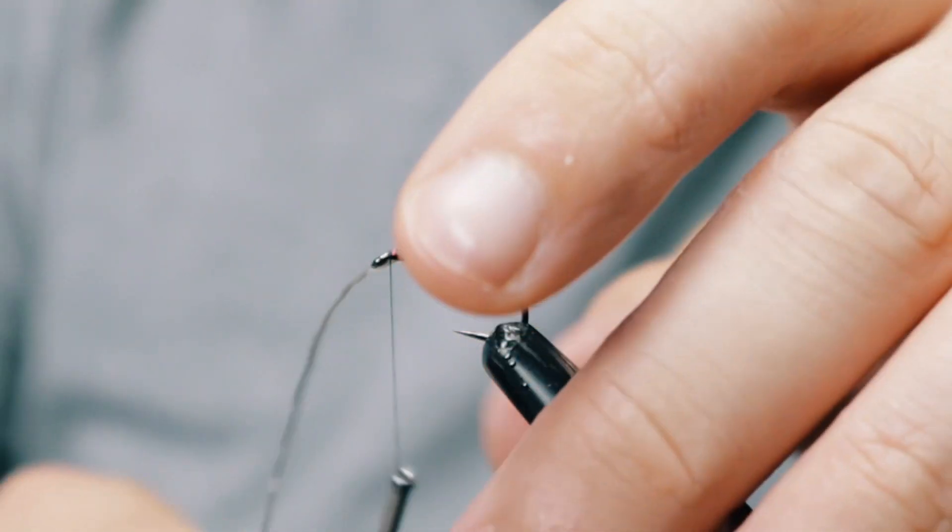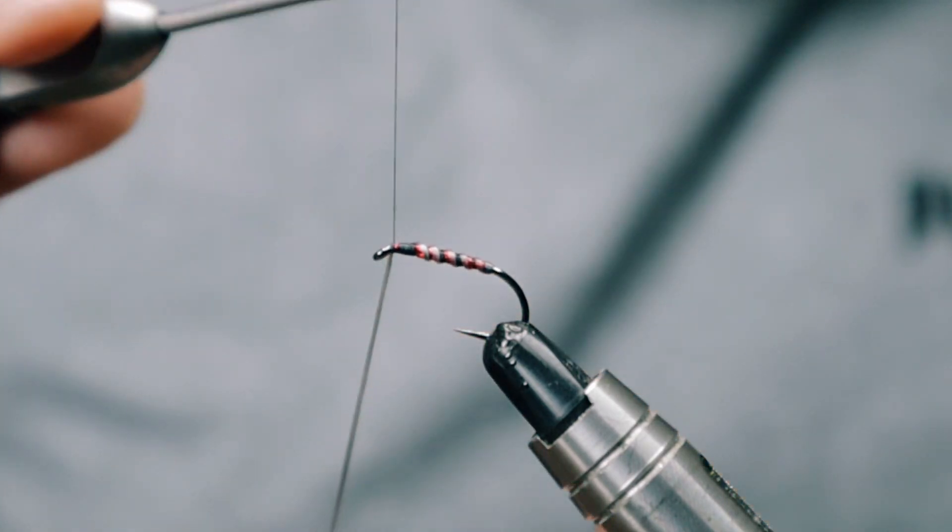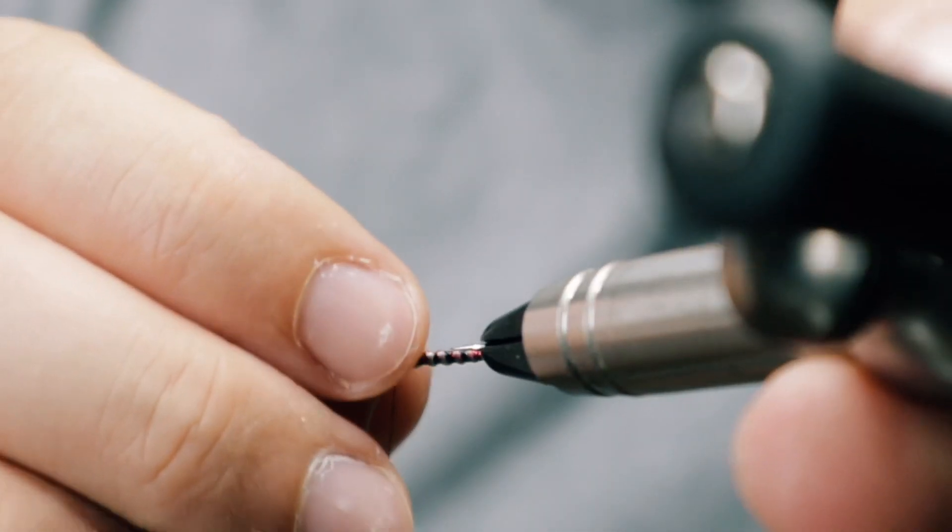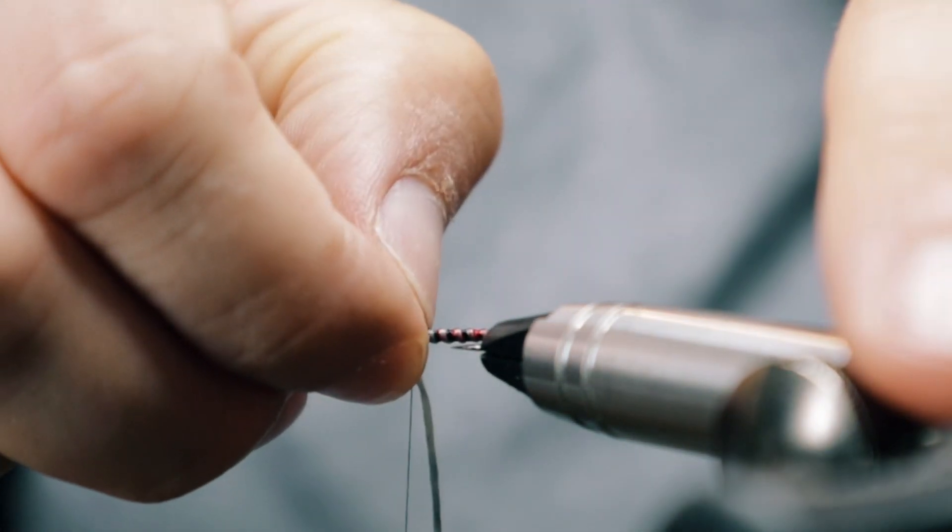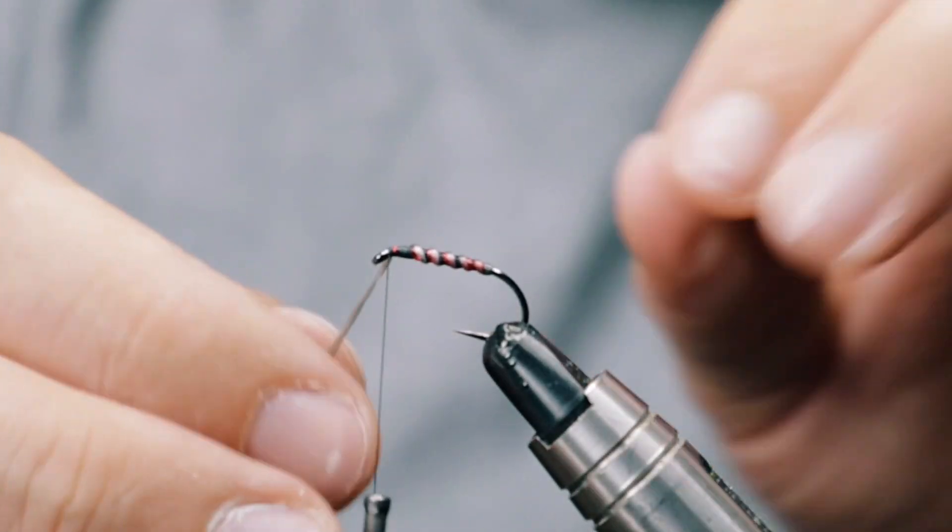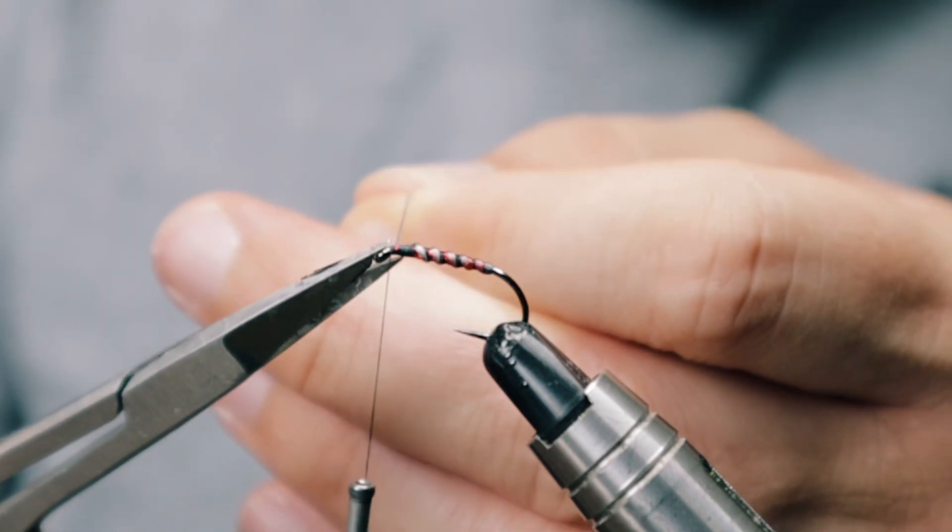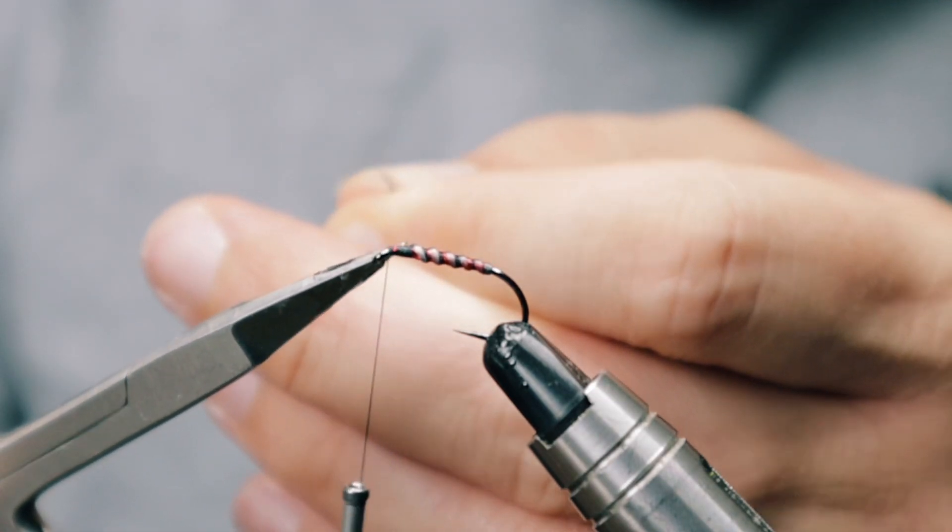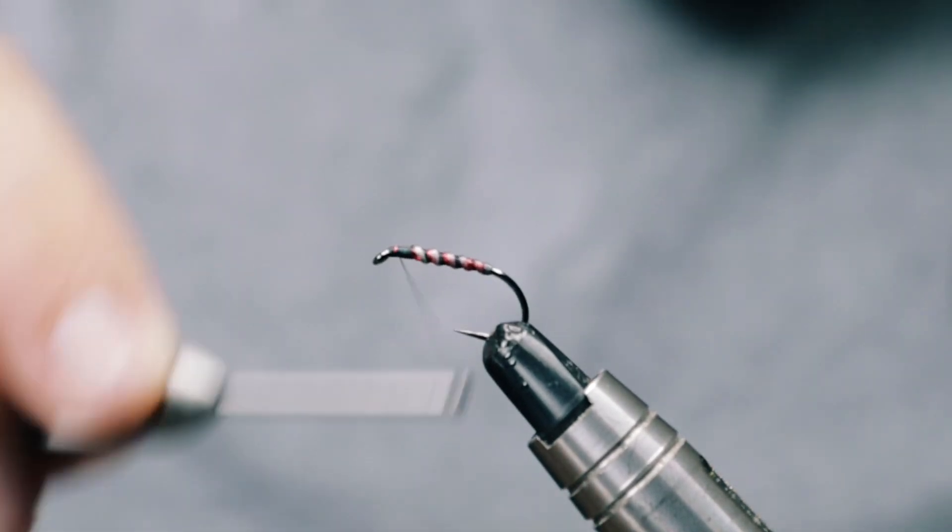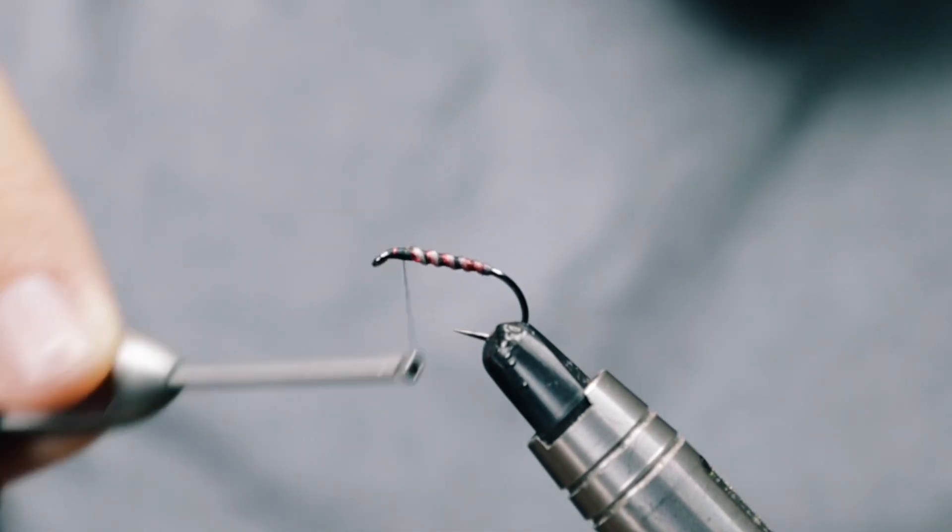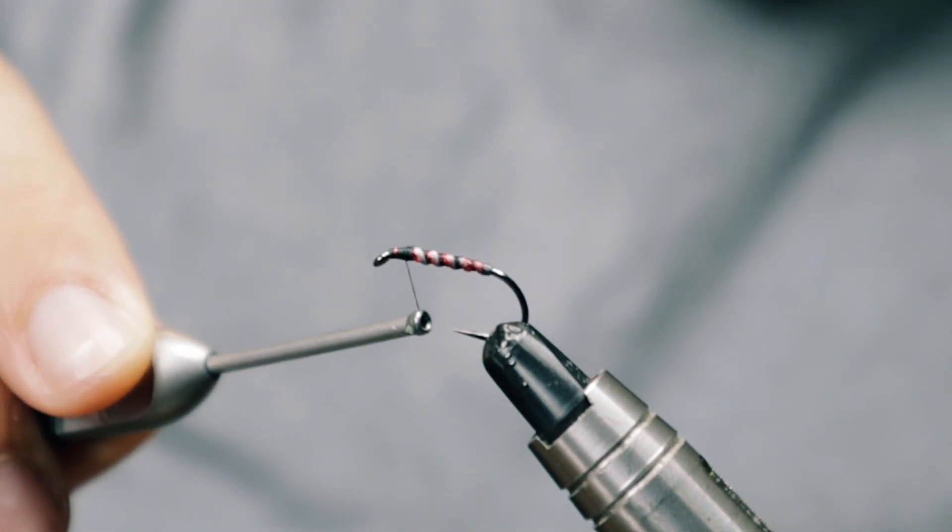And again, similarly, I'm going to wind this up into the head area. Just helps add that little bit of buildup. Then when you're happy with that, you can pull this tight, snip with a nice clean finish, and then just start to tidy up and think about what you want to form and how you're going to form the head here.